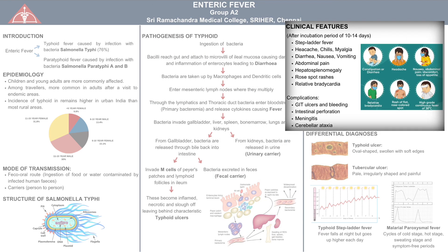After an incubation period of around 14 days, patients present primarily with fever which shows a characteristic step-ladder pattern, where fever falls at night but goes up higher each day. There may also be complaints of headache, myalgia and chills. Patients will most likely present with abdominal pain, diarrhea, nausea and vomiting. Clinically, the presence of rose spots on the chest and abdomen which fade on the application of pressure, hepatosplenomegaly and mild bradycardia indicates typhoid.